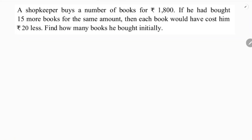A shopkeeper buys a number of books for rupees 1800. If he had bought 15 more books for the same amount, then each book would have cost him 20 rupees less. Find how many books he bought initially.